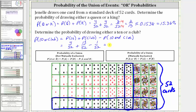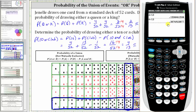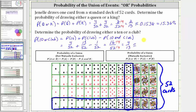The common denominator is 52, and the numerator is four plus thirteen minus one, which is sixteen. Looking at the cards, we have a total of sixteen favorable outcomes for a card that is a ten or a club, confirming the probability is 16/52. Dividing both by four to simplify gives us 4/13. To four decimal places, that's approximately 0.3077, which is 30.77%.